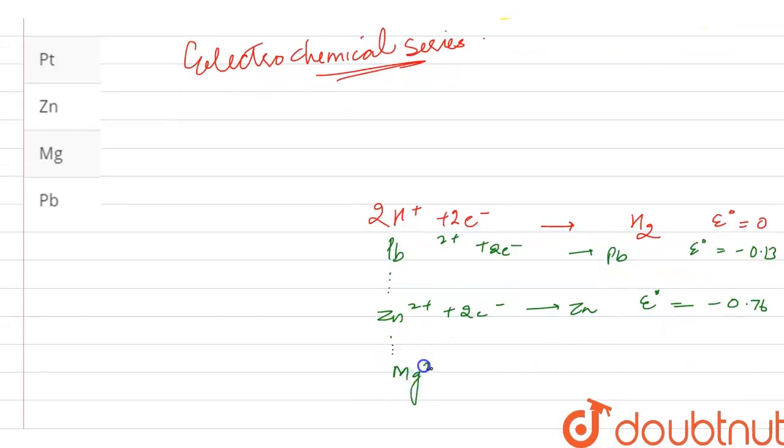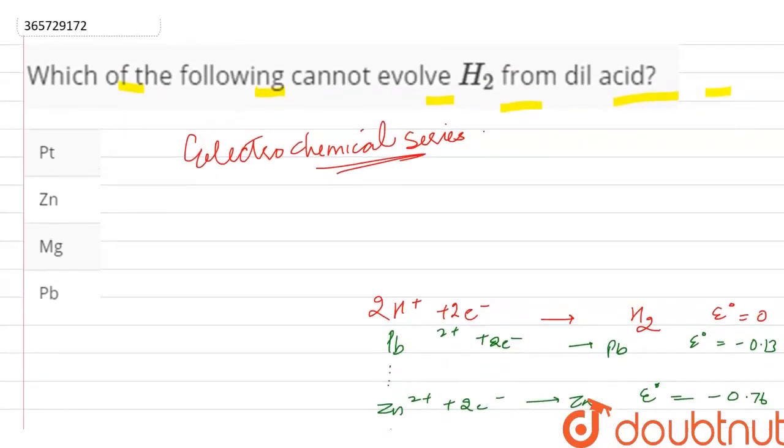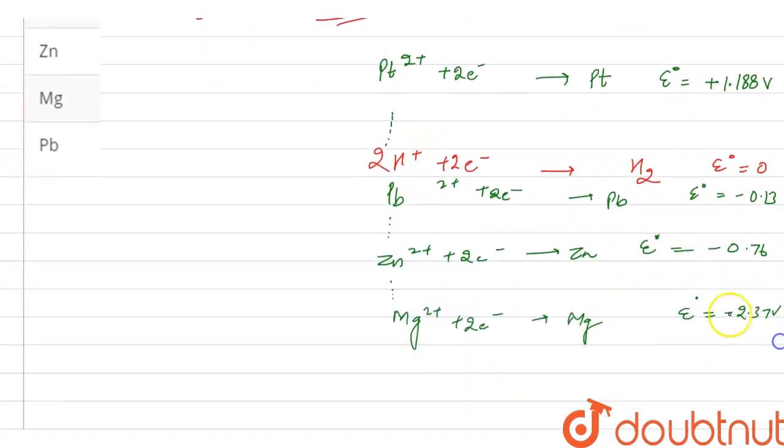The platinum E naught is positive because its reduction potential is positive. Platinum 2-positive takes electrons to make platinum. The E naught is plus 1.188 volt.